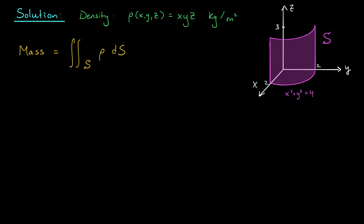Looking at this picture, I see that S can be described really nicely in cylindrical coordinates — I could write it simply as R equals 2. How could I write the points x, y, z in terms of cylindrical coordinates? X is given by R cos theta, so in this case 2 cos theta. Y is given by R sine theta, so 2 sine theta. And z is given by z. We obtain a parametric equation that traces out our surface: R of theta, z equals this expression. Based on where our surface lives, theta ranges from 0 to pi over 2, and z ranges from 0 to 3.